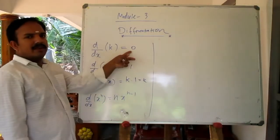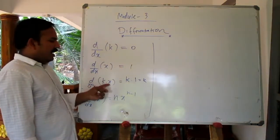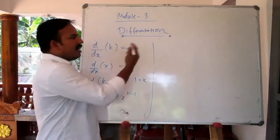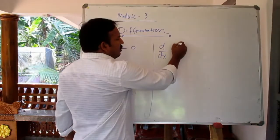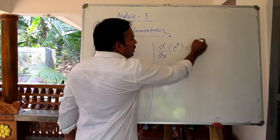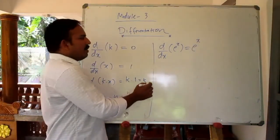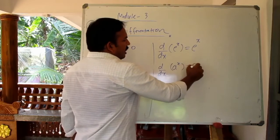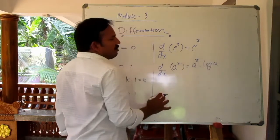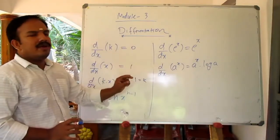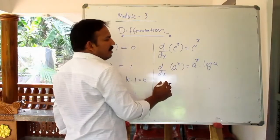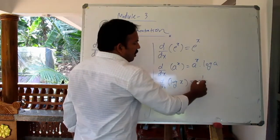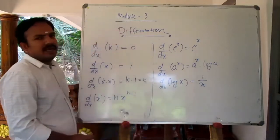d by dx of e^x equals e^x. For d by dx of a^x, the result is a^x into log a. For d by dx of log x, the derivative equals 1 by x.